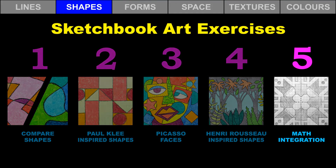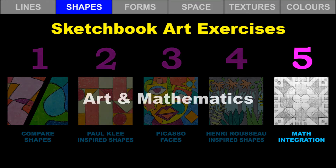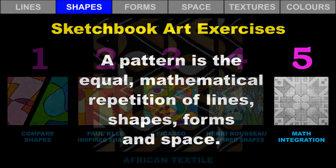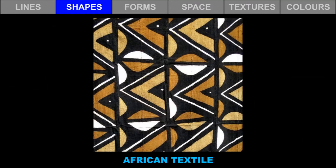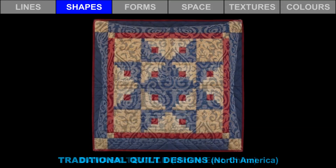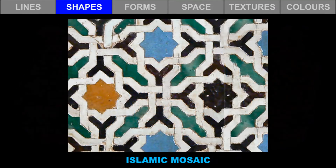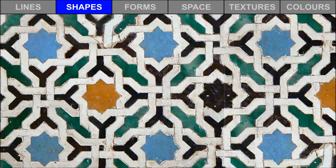The next art exercise combines art and mathematics as we create patterns on a grid. A pattern is the equal mathematical repetition of lines, shapes, forms, and space. Here are just a few beautiful examples of patterns from all over the world. We can see textile patterns from Africa, the Middle East, and North America. We can see ceramic patterns from South America and Islamic mosaic patterns. These varied patterns all have repeating lines, shapes, and spaces that have been designed on a grid.